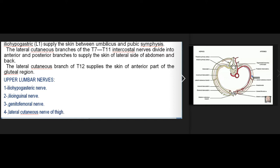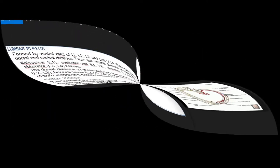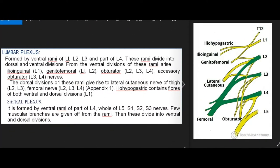The lateral cutaneous branch of T12 supplies the skin of the anterior part of the gluteal region. Upper lumbar nerves: (1) iliohypogastric nerve, (2) ilioinguinal nerve, (3) genitofemoral nerve, (4) lateral cutaneous nerve of thigh. Lumbar plexus is formed by the ventral rami of L1, L2, L3 and part of L4. These rami divide into dorsal and ventral divisions.